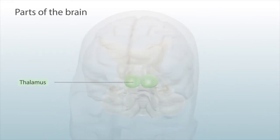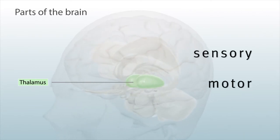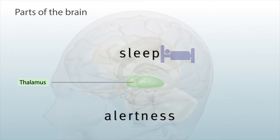The thalamus in the center of the brain relays sensory and motor information to the cortex, and helps with consciousness, sleep, and alertness.